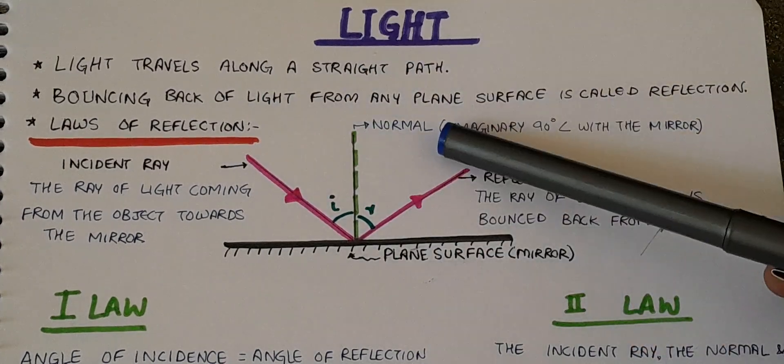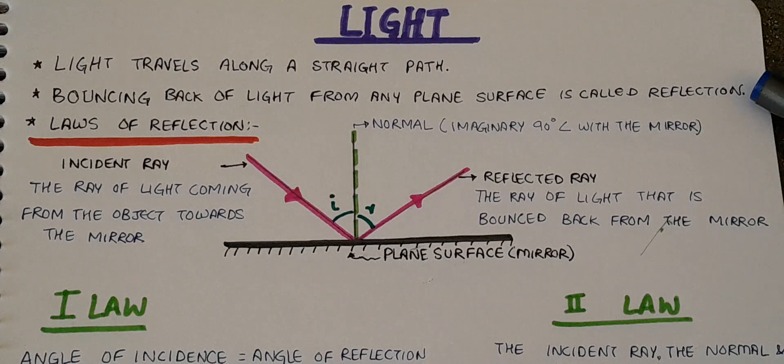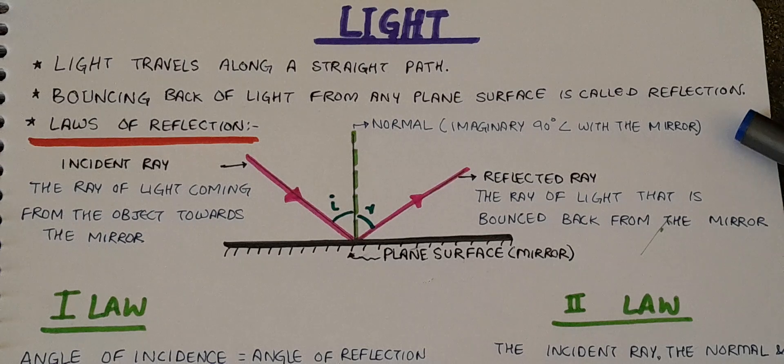Bouncing back of light from any plane surface is called reflection. When a light ray hits a plane surface, it always comes back to that medium. That is called reflection.